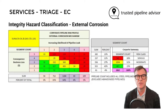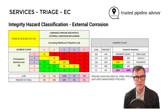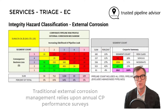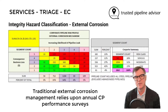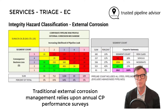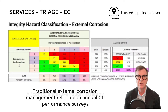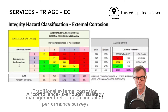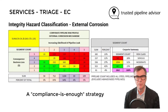Triage results are also created for the threat of external corrosion. Traditional management of external corrosion has been considered satisfactory by completion of annual CP operational performance audits, a strategy referred to as compliance is enough.